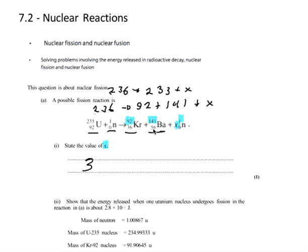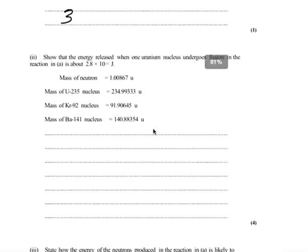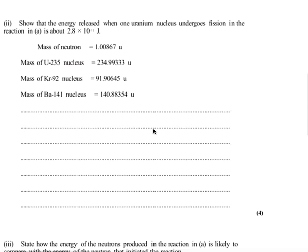Next, we're asked to show that the energy released when one uranium nucleus undergoes fission in the reaction, we show that it's about 2.8 times 10 to the negative 11 joules. We're given the mass of all of the products and reactants in this equation. We have the neutron, uranium, krypton, and barium.